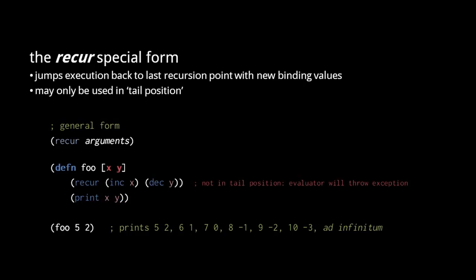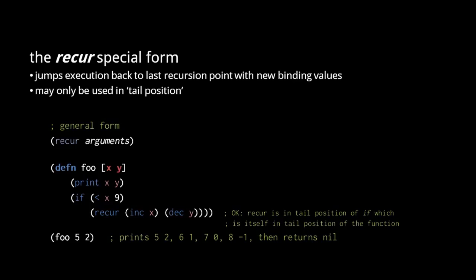To prevent infinite recursion, recur should be used conditionally in an if form. When x reaches the value 9, the foo function will stop making additional recursive calls. You might not think that the recur is in tail position, but tail position is transitive — the if form is in tail position of the function, and the recur form is in tail position of the if form, so transitively the recur form is in tail position of the function. When we have nested functions, a recur form invokes the function in which it is most directly contained, so inside a nested function, we cannot use recur to invoke an enclosing function.